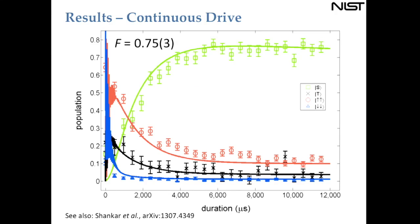Now let's look at experimental results. We do Doppler cooling and sideband cooling to the ground state on the cooling ions, then apply all interactions and wait. Starting in the down-down state, the singlet state population grows over a timescale of a few milliseconds and settles to a steady-state value. The fidelity for generating the singlet corresponds to its population, which is 75%.